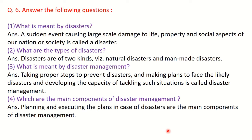Question number 6, short questions. First: what is meant by disasters? A sudden event causing large-scale damage to life, property, and social aspects of our nation or society is called a disaster. Second: types of disasters — two types: man-made and natural. Third: what is disaster management? Taking proper steps to prevent disasters, making plans to face likely disasters, and developing the capacity to tackle such situations.